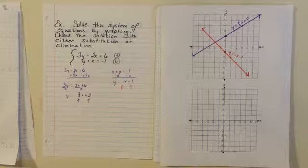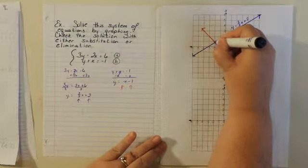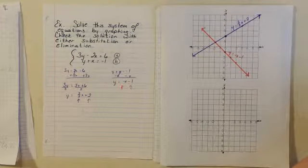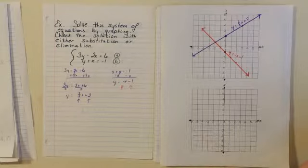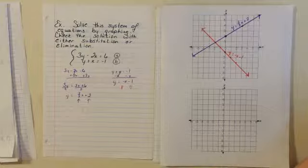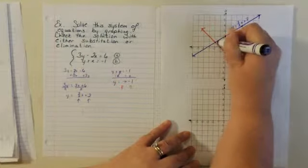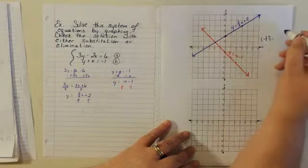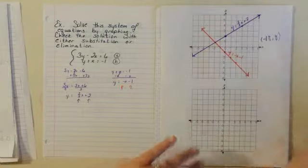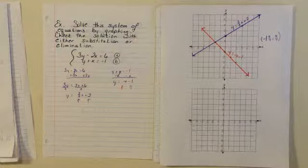Up until now, when the book has given us graphs to draw and points to find, it has always given us pretty points. You'll notice this time the point is not on a grid line — and it's not because of my drawing for once. Because the point is not pretty does not mean it's necessarily wrong. In this case, it looks like it's approximately negative 1 and 6/7 and about 6/7. So that is my guess as to where this dot lies.